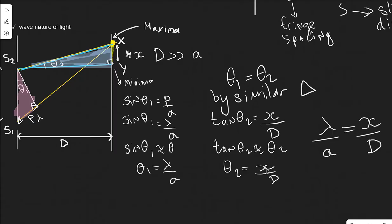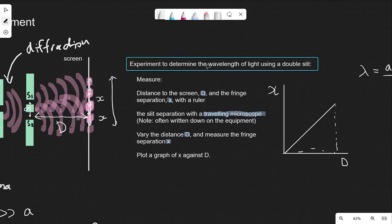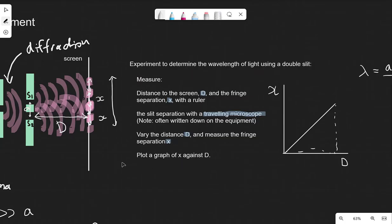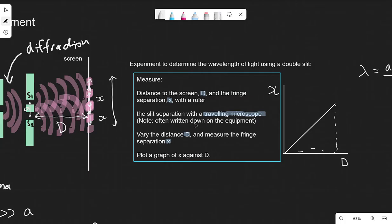If you're doing AQA, the proof is exactly the same — the only difference is the symbols used: fringe separation is W and slit separation is S. Now let's look at an experiment to determine the wavelength of light using a double slit. We'll measure the distance to the screen D and the fringe separation X with a ruler. The slit separation, if doing this in the lab, will typically be written on the equipment itself.